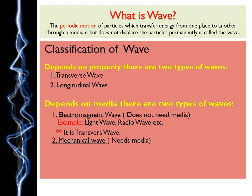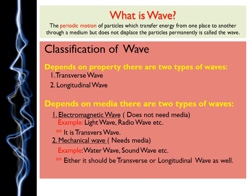An important point to note with a double star: the electromagnetic wave is a transverse wave. For example, the light wave is a transverse wave. The mechanical wave, on the other hand, needs a medium. Examples of mechanical waves include water waves and sound waves — both need a medium, so these are called mechanical waves.